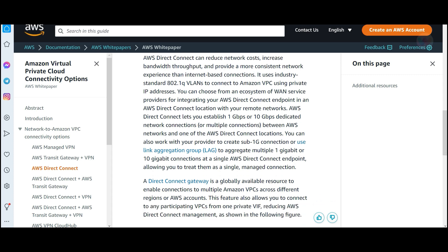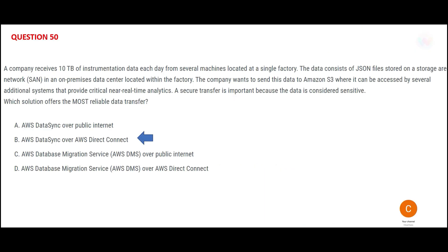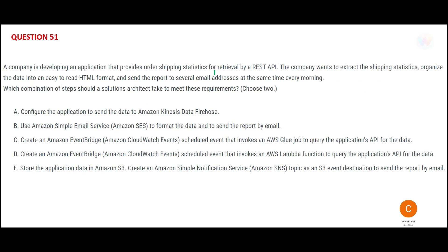Using Direct Connect gives you increased bandwidth, throughput, and security — so this is my final answer. Now let us look at question 51. There is a company developing an application that provides statistics via a REST API. Anyone who wants the statistics can call the API and get the data — this is how most third-party applications like currency conversion apps work.